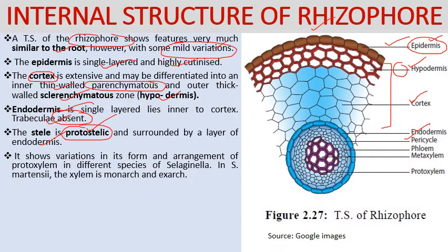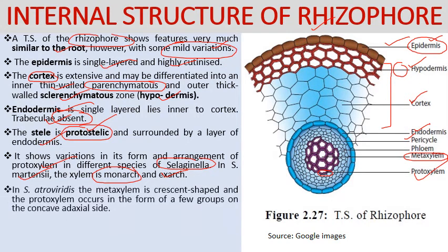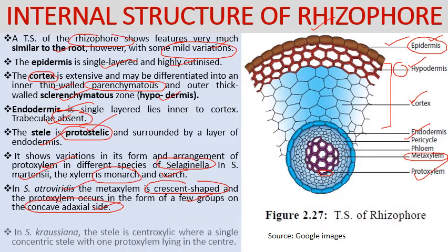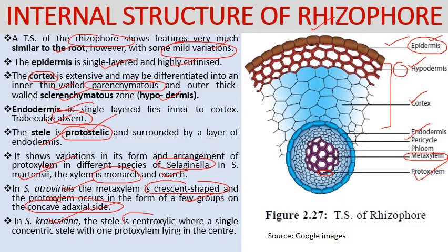In the rhizophore, trabeculae are absent. The stele is protostelic and is surrounded by a layer of endodermis. There is variation in xylem arrangement among species: in Selaginella martensii the xylem is monarch and exarch; in Selaginella atroviridis the meta xylem is crescent-shaped and proto xylem occurs as a few groups on the concave adaxial side; in Selaginella krausiana the stele is centroxylec — xylem lies at center surrounded by phloem.